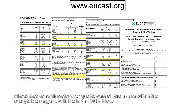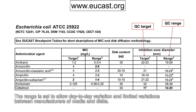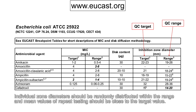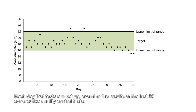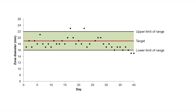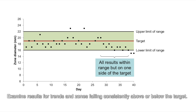Check that zone diameters for quality control strains are within the acceptable ranges available in the QC tables. The range is set to allow day-to-day variation and limited variation between manufacturers of media and discs. Individual zone diameters should be randomly distributed within the range and mean values of repeat testing should be close to the target value. Each day that tests are set up, examine the results of the last 20 consecutive quality control tests and look for trends or zones falling consistently above or below the target.